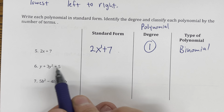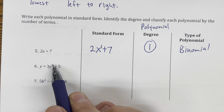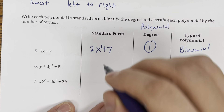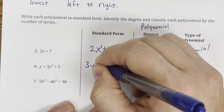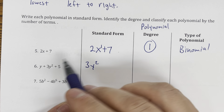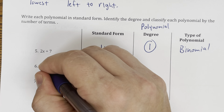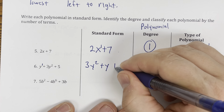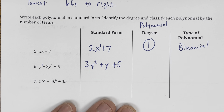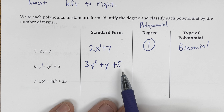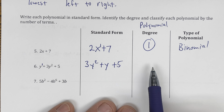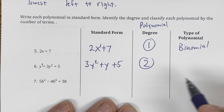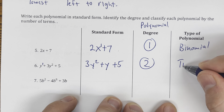This next one is not in descending order. I have y to the second and a y, so y squared has the higher degree and needs to come first. So we have 3y squared, then the next highest degree is y to the first, giving us plus y, and then the constant: plus 5. Now it's in standard form in descending order. The degree is 2, and this is a trinomial because it has 3 terms.